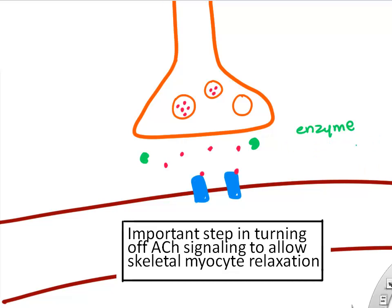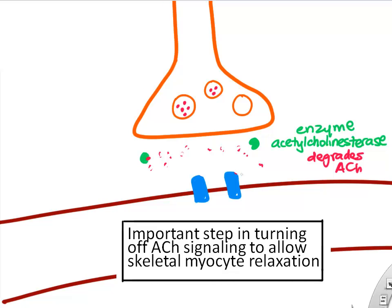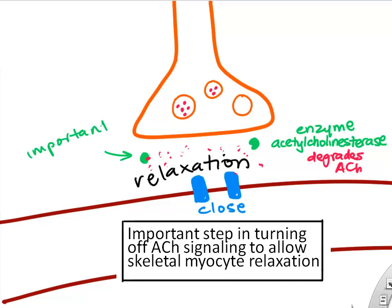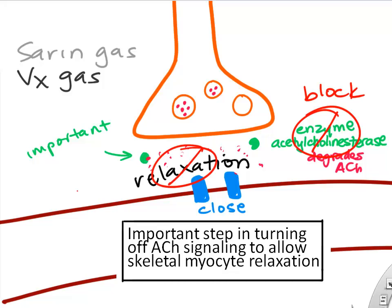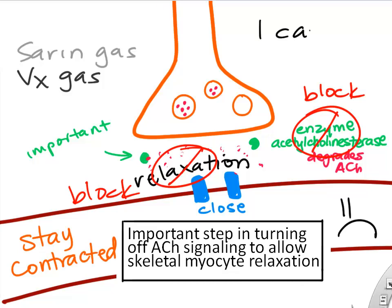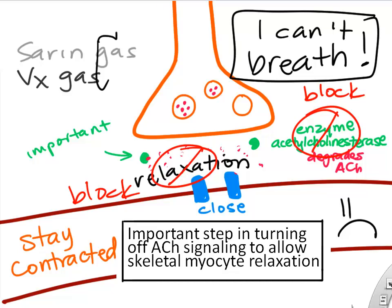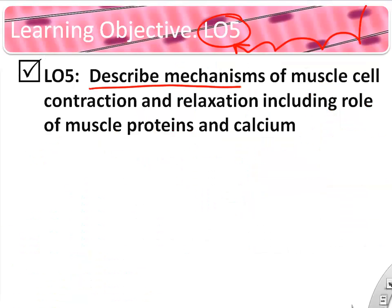An important step in turning off acetylcholine signaling is the enzyme acetylcholinesterase, which breaks apart acetylcholine. When it's broken apart, acetylcholine is released from the receptors, the receptors close, and that triggers mechanisms for relaxation. Blocking that enzyme — as with nerve agents like sarin gas or VX — prevents the muscle from relaxing because the acetylcholine signal never turns off. If your muscles won't relax, you can't breathe, which can be fatal.